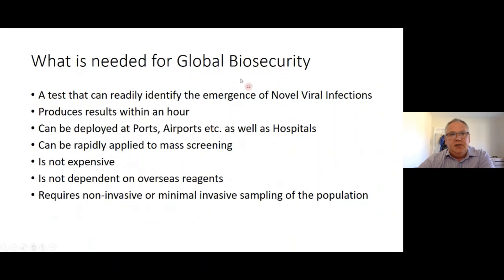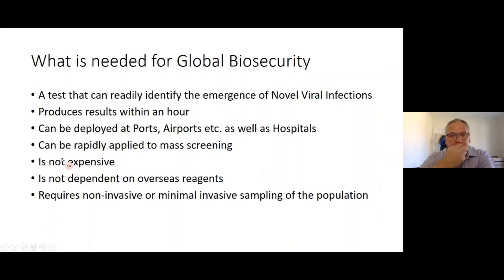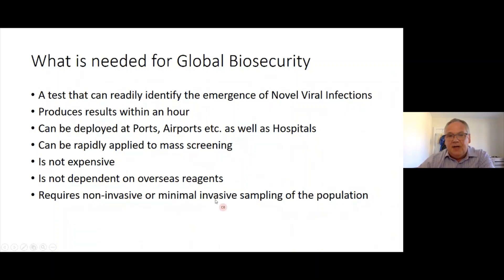What is needed for global biosecurity is a test that can readily identify the emergence of novel viral infections — not be over-specific — produce results within an hour, and be deployed at ports, airports, as well as hospitals. We need something that can be rapidly applied to mass screening, so it cannot be expensive. We need very low running costs if screening millions of people, cannot be dependent on expensive overseas reagents, and on top of my wish list: non-invasive or minimally invasive sampling for the population. It's a big ask of the diagnostic world to come up with all of this.